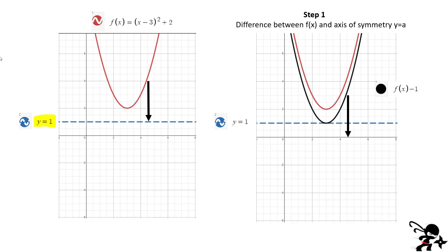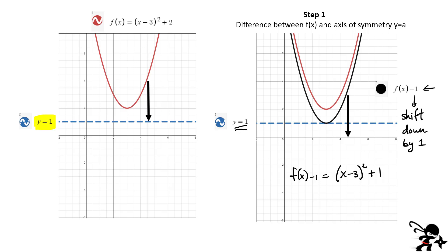We're first going to consider the y equals 1 axis of symmetry. Step 1: find the distance between the red curve (our function) and the axis of symmetry. What we're really evaluating here is f of x minus 1 — f of x is the red curve, and we subtract 1, which is the axis of symmetry. If I compute f of x minus 1, the new black function is x minus 3 squared plus 1 (since 2 minus 1 equals 1). This is essentially just shifting my original function down by 1 unit, because the axis of symmetry is 1.